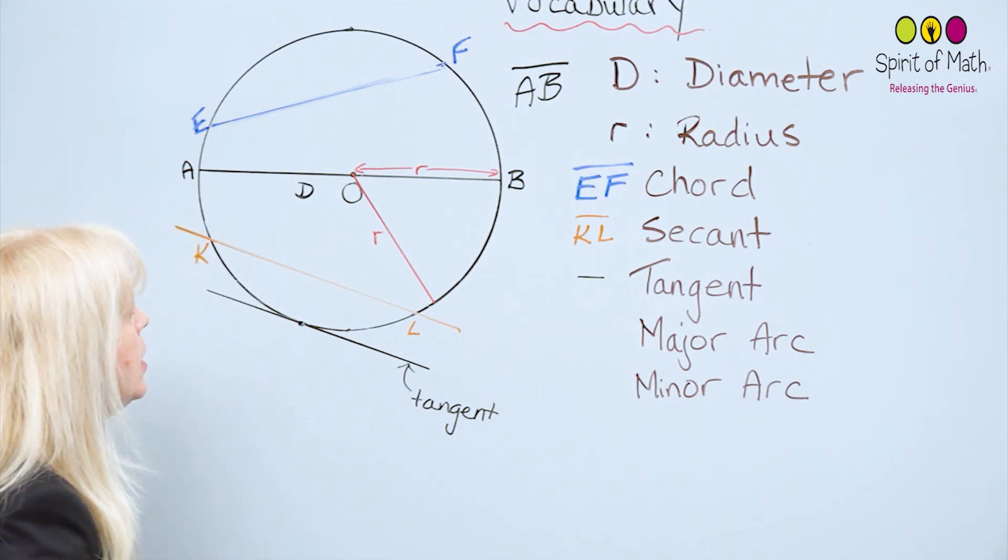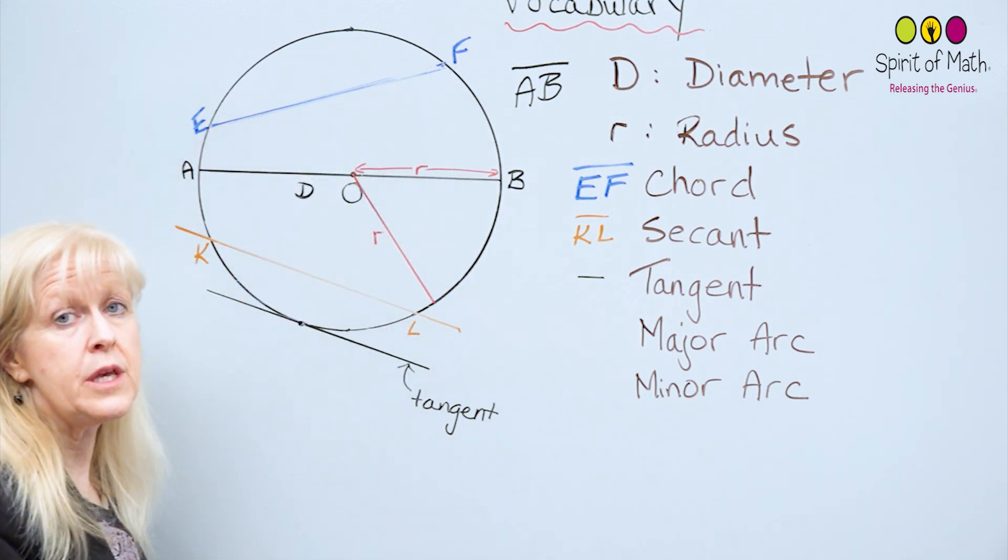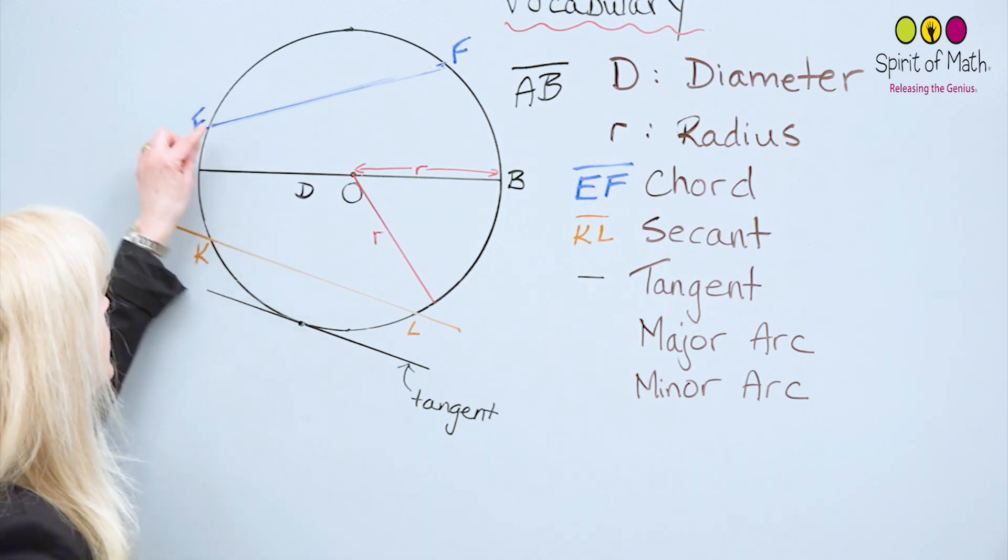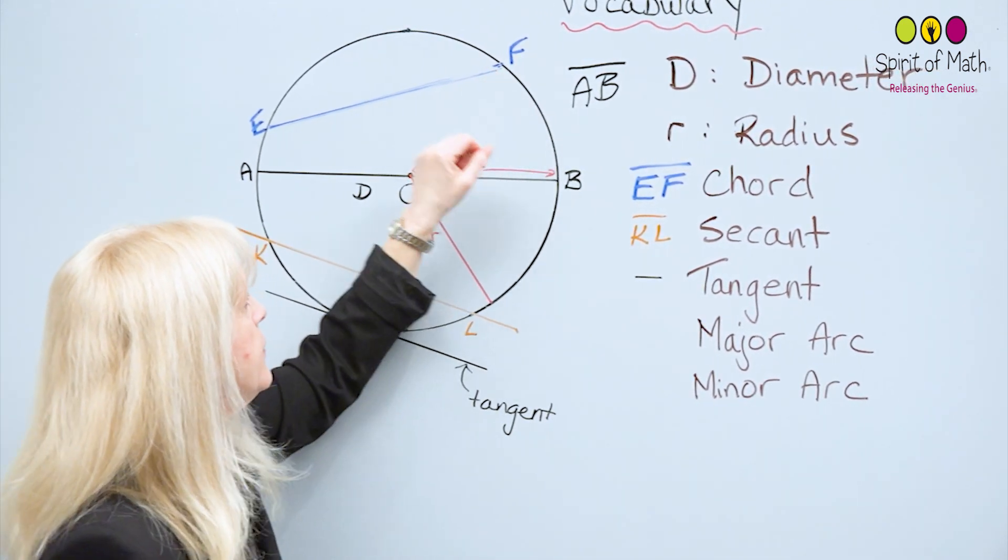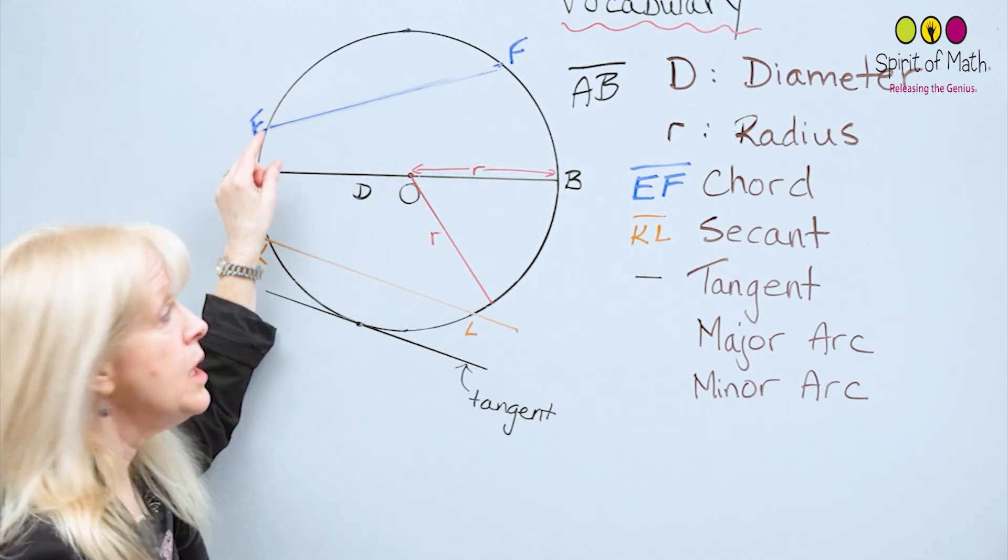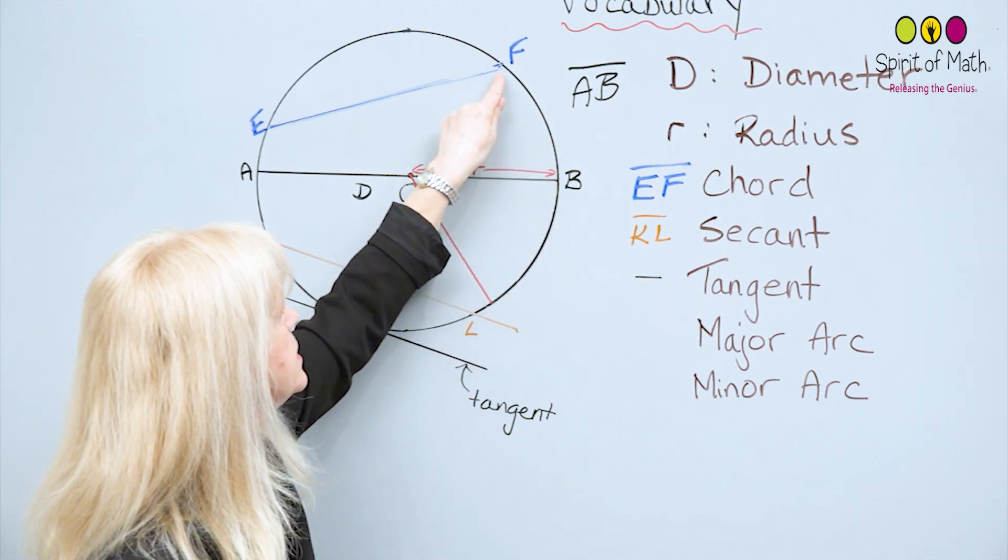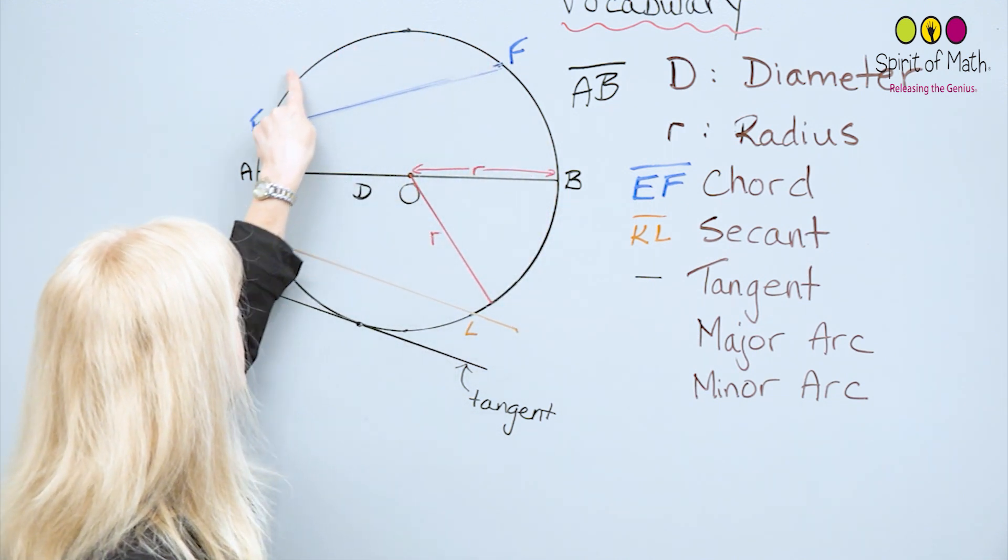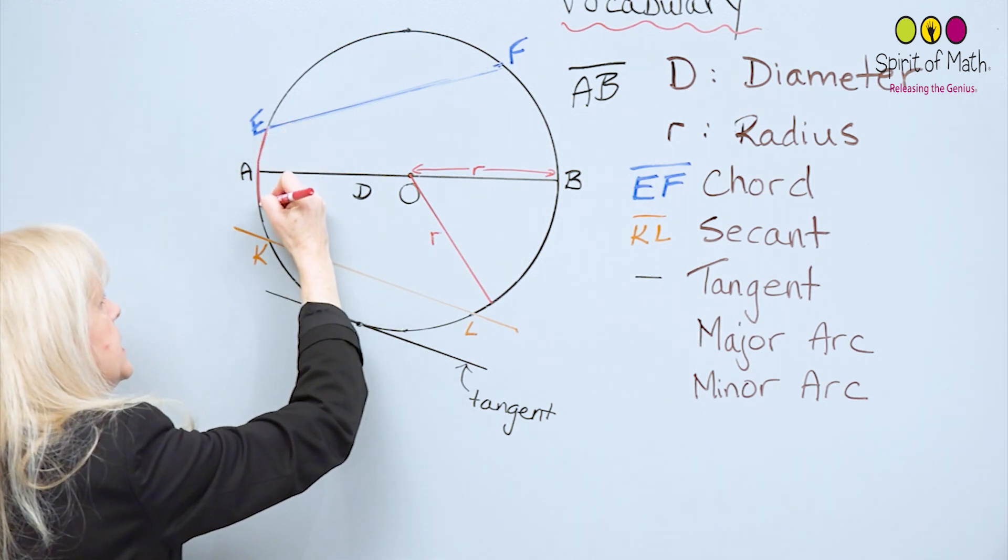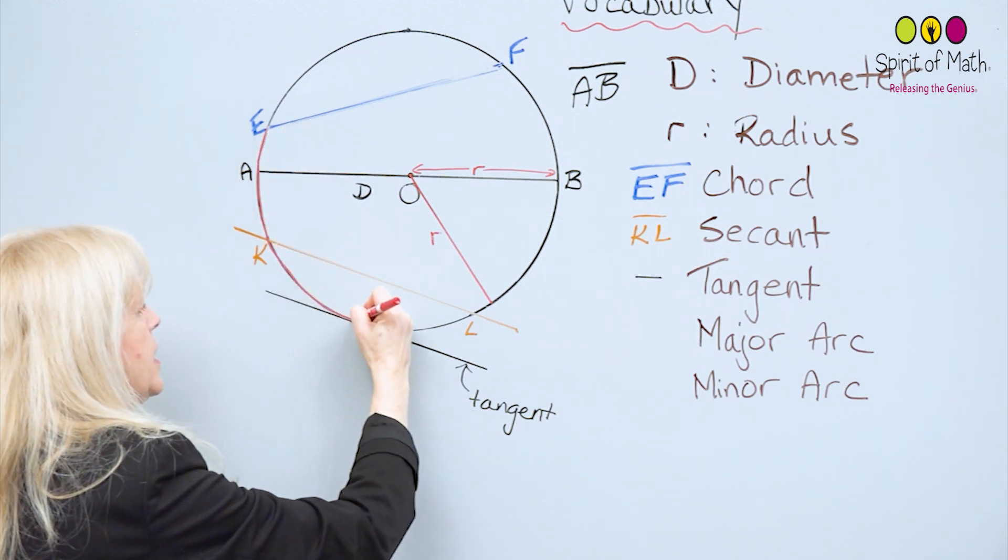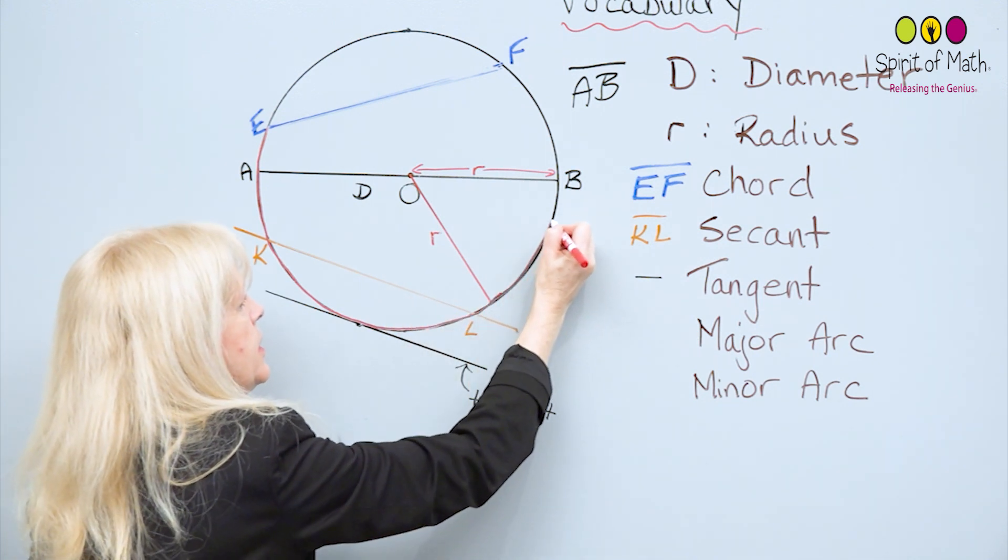A major arc is when you take a chord, so we have this chord EF, and when you look at this arc here, there's an arc on one side of it, and there's another arc on the other side of it. So this arc that goes right around here, in this case, is larger than this other arc here. So this arc that comes all the way around here, this one is called the major one because it's larger than the other one.